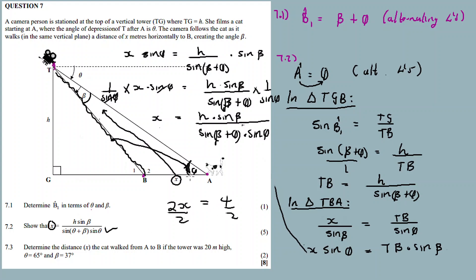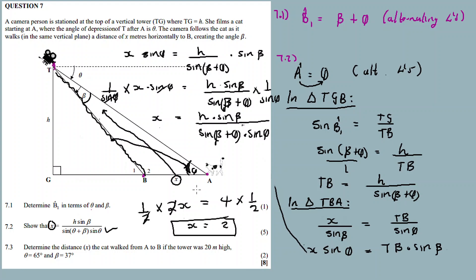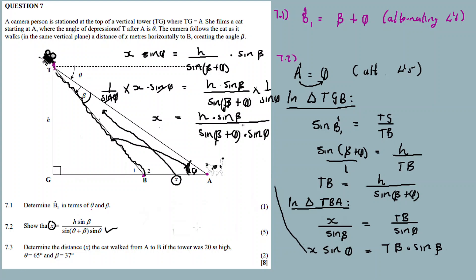Instead of dividing I multiplied by the multiplicative inverse — that's the same thing. For example, x = 4 divided by 2 equals 4 times one-half equals 2. That's the method I applied. So question 7.2 is done.